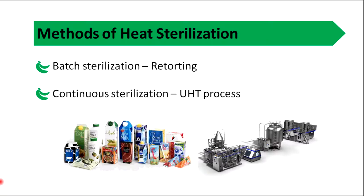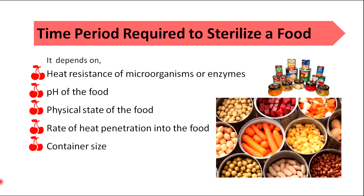There are two types of heat sterilization: batch sterilization and continuous sterilization. When we sterilize a food product, the sterilization time is very important. It depends on the heat resistance of microorganisms or enzymes, pH of the food, physical state of the food, rate of heat penetration into the food, and container size.